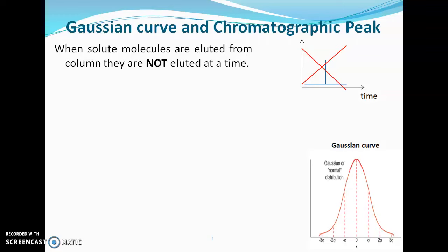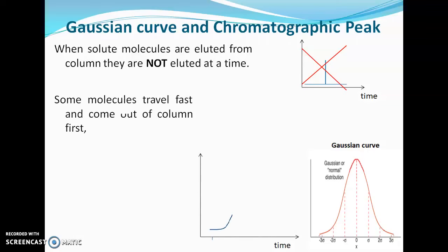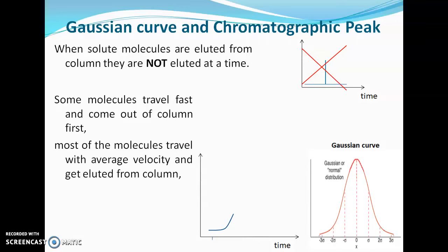When sample molecules are injected into the column, they travel with different velocities. Some solute molecules travel with fast speed and come out of the column first — they will form the front portion of the peak. Most of the molecules travel with average velocity and get eluted, forming the central or middle portion of the peak.